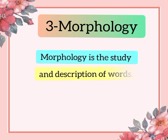Number three is morphology. Morphology is the study and description of how words are formed in a language. It is the study of morphemes — morphemes means the smallest units of meaning. Morphemes can be categorized into different types according to their functions, such as free morphemes and bound morphemes. These we will study individually in other lectures.